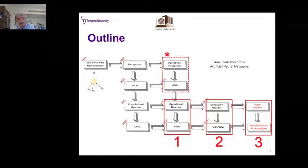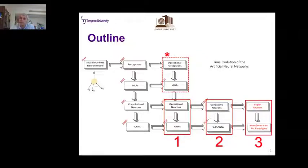Finally, the latest neural model: super neurons, if time permits, and what we are aiming for in the near future. Starting from 2015, we developed operational neurons and used them in heterogeneous networks to achieve significantly superior learning performances in various challenging problems. I'll show you a few examples.